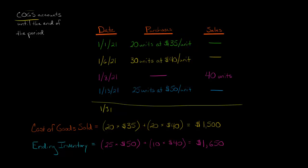But we still have another 20 units because this is just 20, but we sold 40. So then the next 20 units are going to come out of this 30 from the January 6th purchase. So that's 20 units at $40 per unit. Add those together, and that gives us $1,500 as our cost of goods sold.